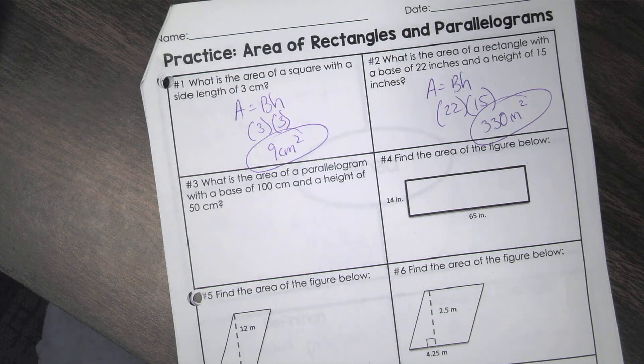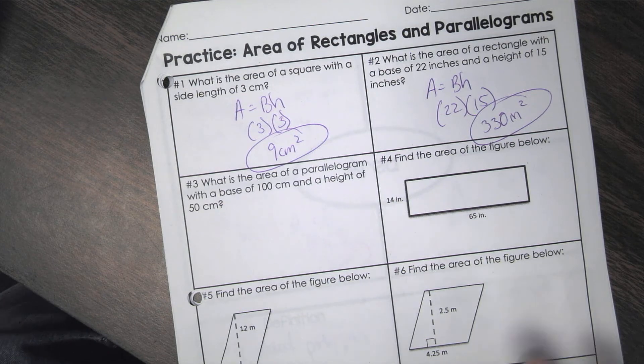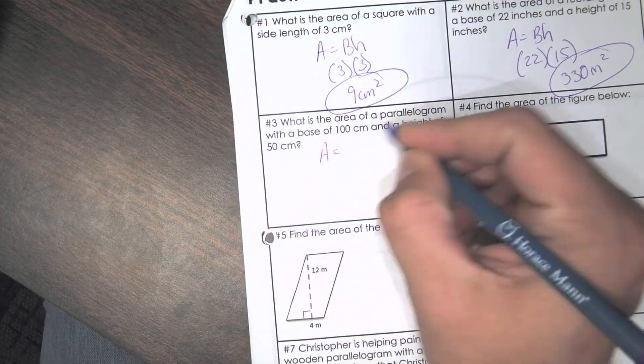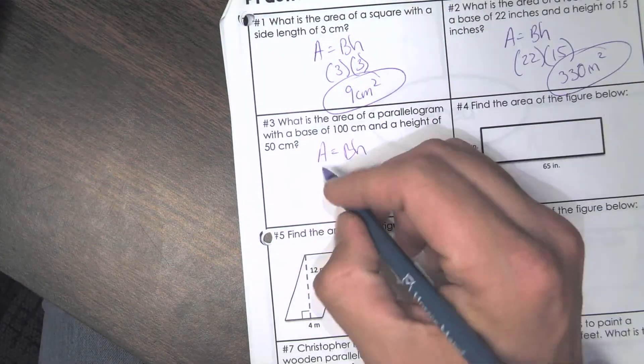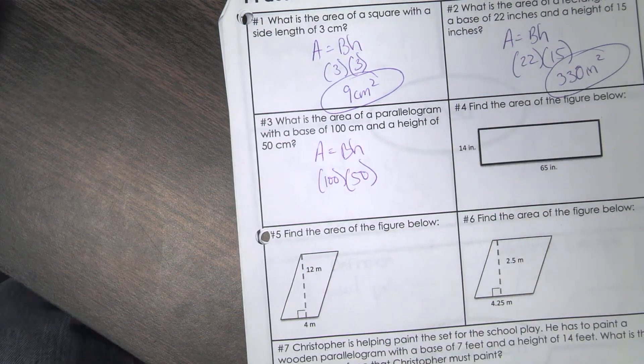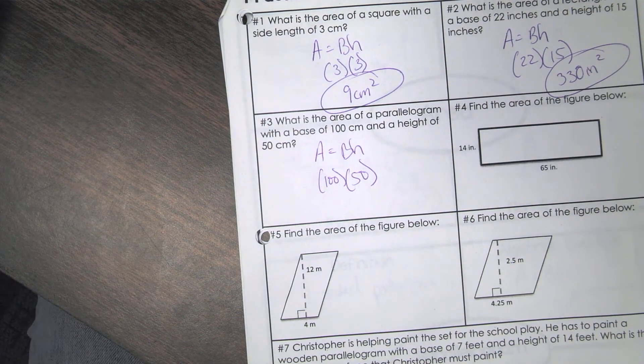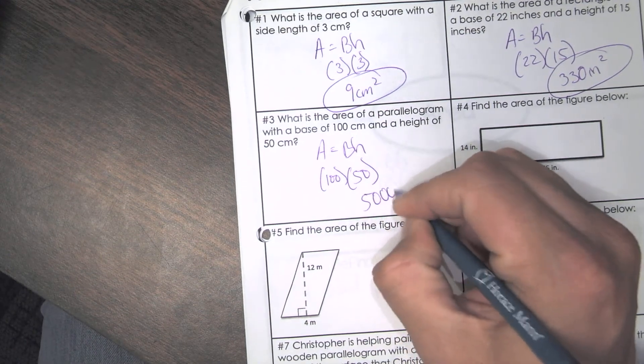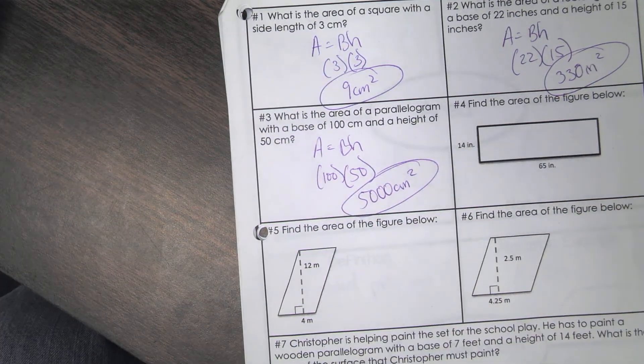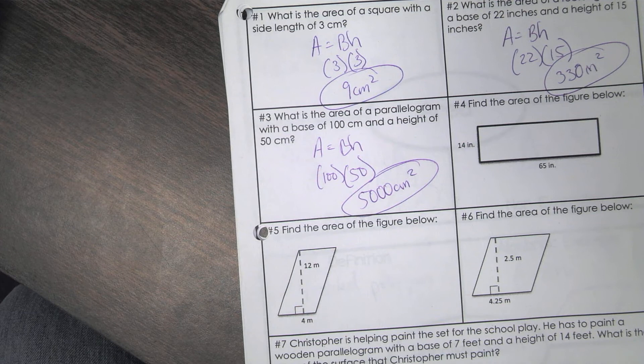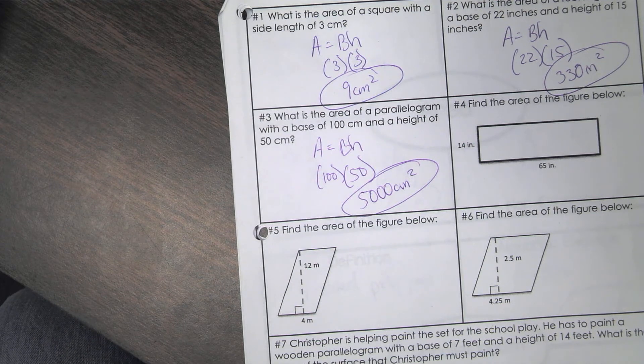Number three. What is the area of a parallelogram with a base of 100 centimeters and a height of 50 centimeters? So once again, base times height. So the base was 100. The height is 50. So what is the area of this one, Hunter? 5,000 centimeters squared.